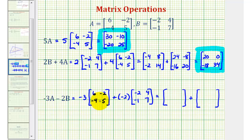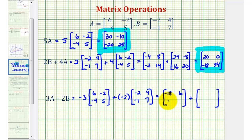We're going to multiply each element in matrix A by negative three. Negative three times six is negative 18. Negative three times negative two is positive six. Negative three times negative four is positive 12. Negative three times positive five is negative 15.